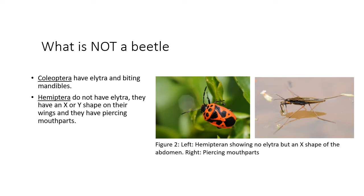Beetles, or Coleoptera, have elytra and biting mandibles. Hemiptera, or true bugs, can look very similar to beetles as pictured here. However, Hemipterans are not beetles as they do not have elytra. Instead, they have an X or Y shape on their wings and they have piercing mouth parts. You can learn more about Hemiptera in workshop 4 in this series.